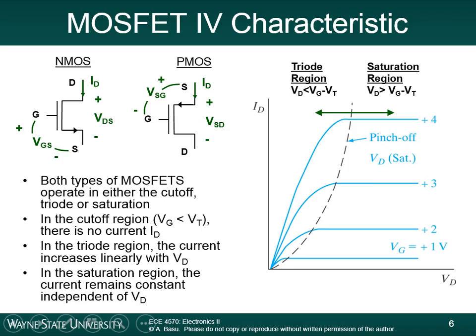The current at which it saturates depends on what the gate voltage is. If you put a small gate voltage on there, you've sort of turned the device on a little, and there's a maximum amount of current that can flow — just a little bit. If you put a larger gate voltage, you turn the device on even more, so there's more current that can flow between the source and the drain. The saturation current increases the more gate voltage you have — the more you turn the device on.